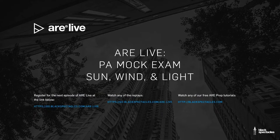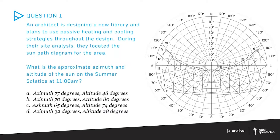Thank you so much, Chris. Thank you for having me and thank you for all the good work your organization is doing for the architecture community and preparing them for the exams. So without further ado, let's jump right into it. The first question — an architect is designing a new library and plans to use passive heating and cooling strategies throughout the design. During their site analysis, they located the sun path diagram for the area. What is the approximate azimuth and altitude of the sun on the summer solstice at 11 a.m.?